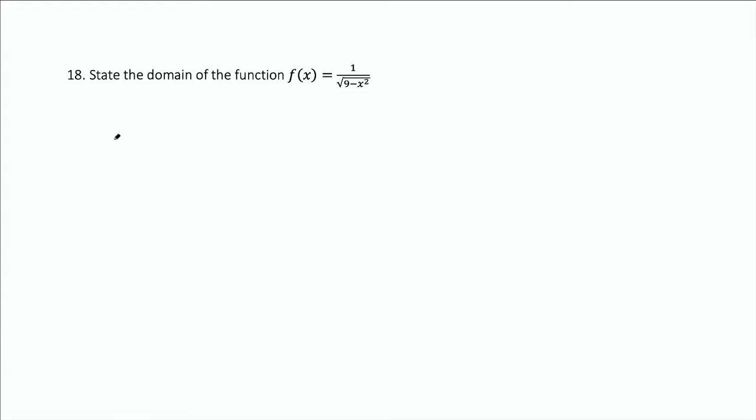So, first of all, the thing that you're dividing by, which is the entire square root of 9 minus x squared, that thing cannot be 0 because we're not allowed to divide by 0.